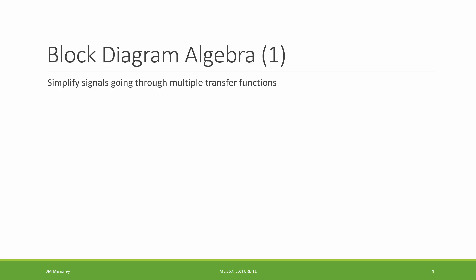One way that transfer functions can be linked together is by placing them in series. In this example, we have an input f going through transfer function T1, coming out transformed as b. Then b goes into T2, and comes out transformed as x. What we're interested in is the net effect of these two transfer functions — the effective transfer function that takes us from our original input f to our eventual output x.